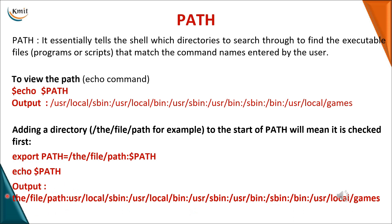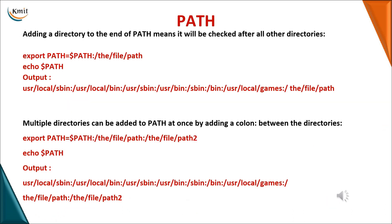The path you specify with export will be added to the beginning of the existing path. If you want to add a new path at the end of the existing path, write it as 'export PATH=$PATH:/new/directory'. To add multiple directories, write 'export PATH=$PATH:/directory1:/directory2' — both paths will be added at the end of your original path.